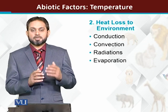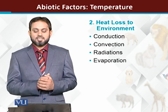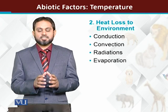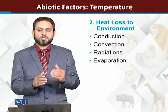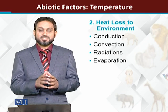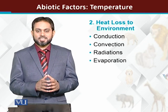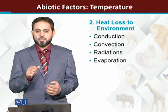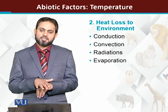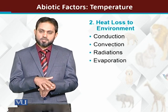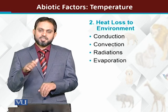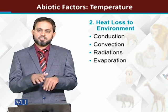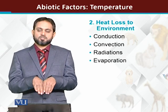An animal's body can lose heat and temperature through different mechanisms. There are four basic patterns by which heat can be lost. The first one is conduction — loss of heat by touch. If our body is hot and a cold object touches it, heat will transfer from the body to the object through direct contact.